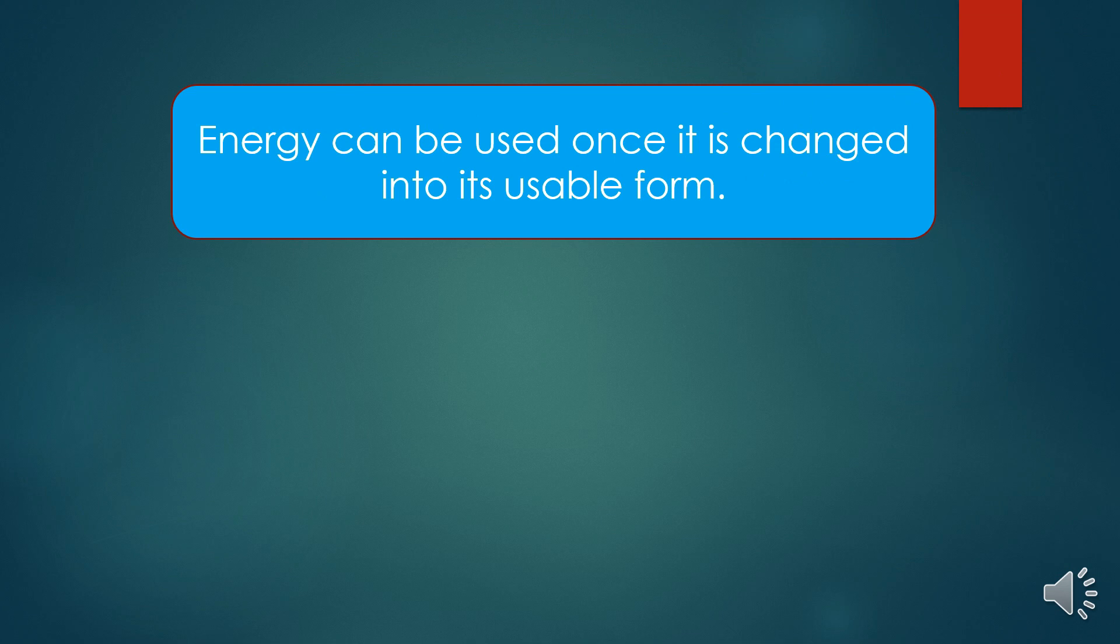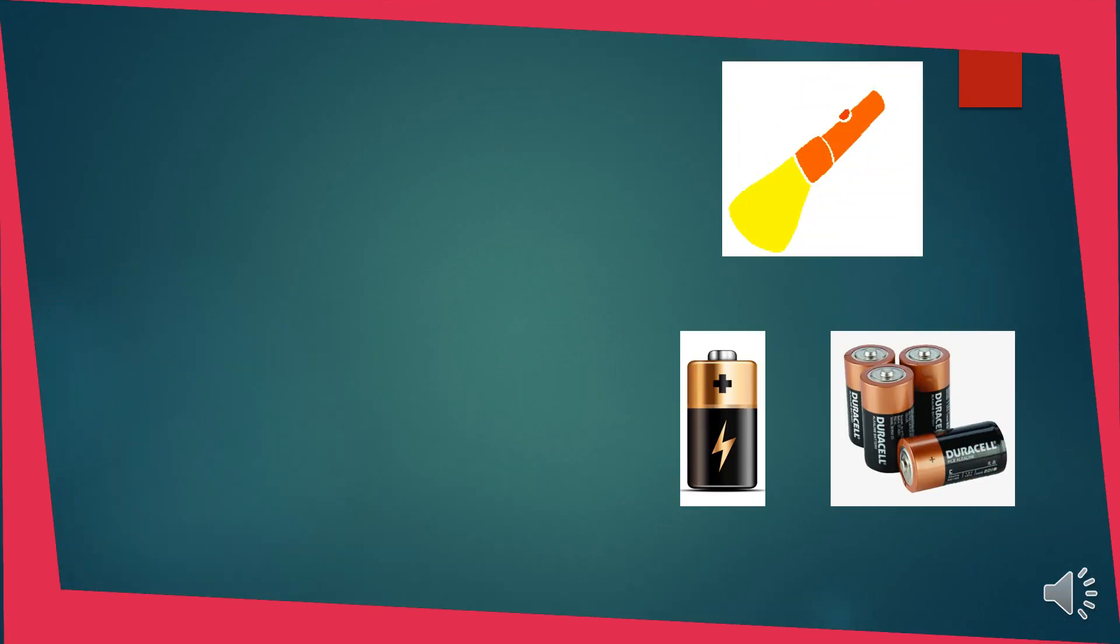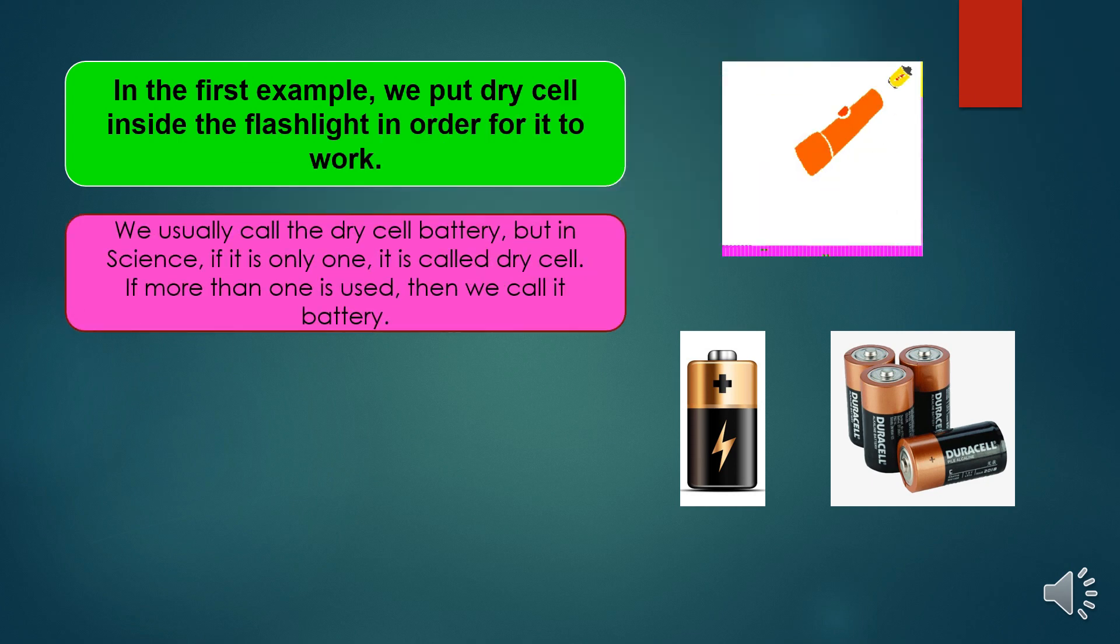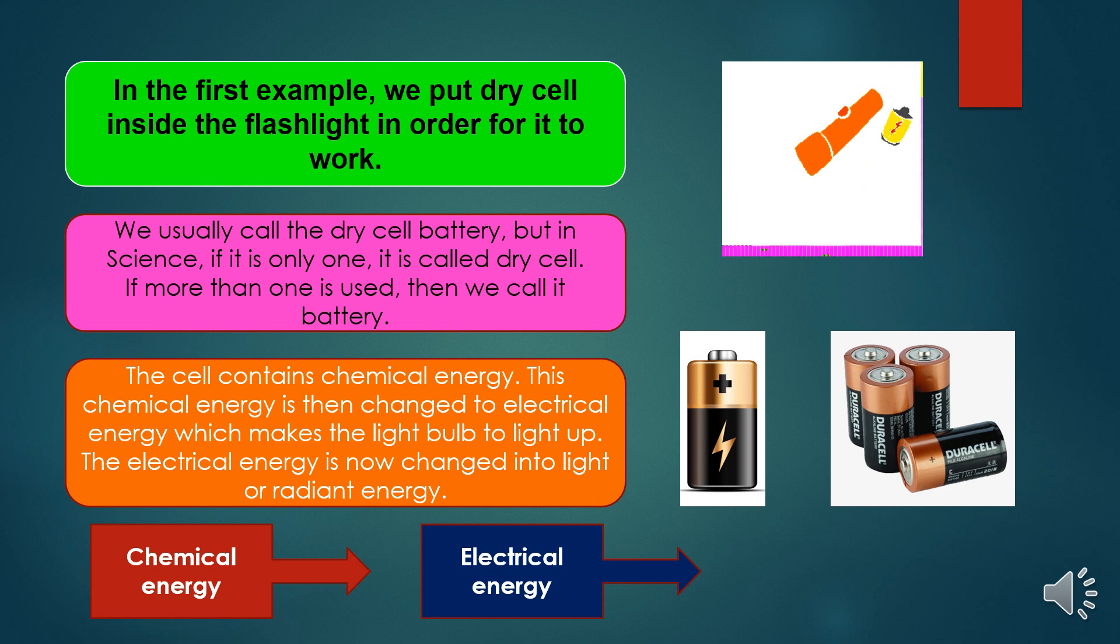Energy can be used once it is changed into its usable form. This is called energy transformation. In the first example, we put dry cell inside the flashlight in order for it to work. We usually call the dry cell battery, but in science, if it is only one, it is called dry cell. If more than one is used, then we call it battery. The cell contains chemical energy. This chemical energy is then changed to electrical energy, which makes the light bulb to light up. The electrical energy is now changed into light or radiant energy.